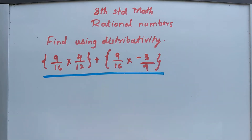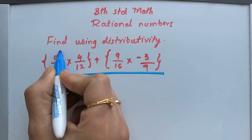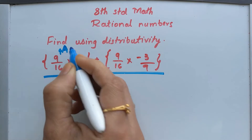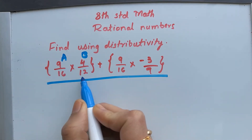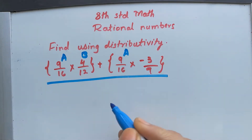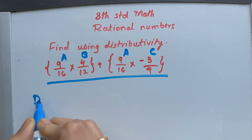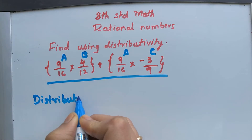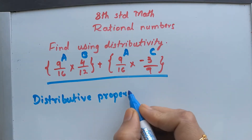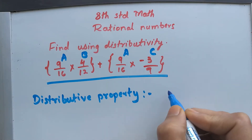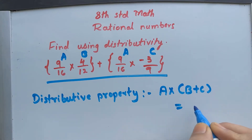Let's take 9 over 16 as 'a', 4 divided by 12 as 'b', and negative 3 divided by 9 as 'c'. The distributive property — distributivity of multiplication over addition of a rational number — is defined as: a multiplied by b plus c equals a multiplied by b plus a multiplied by c.